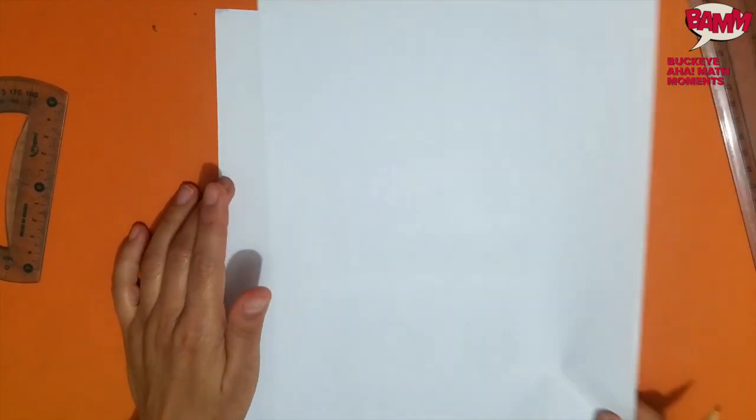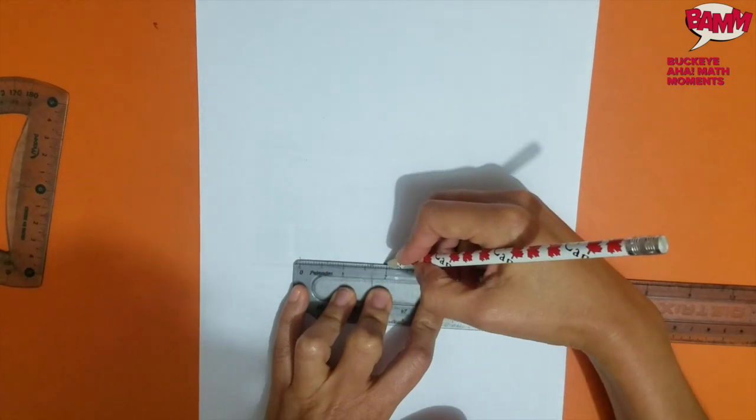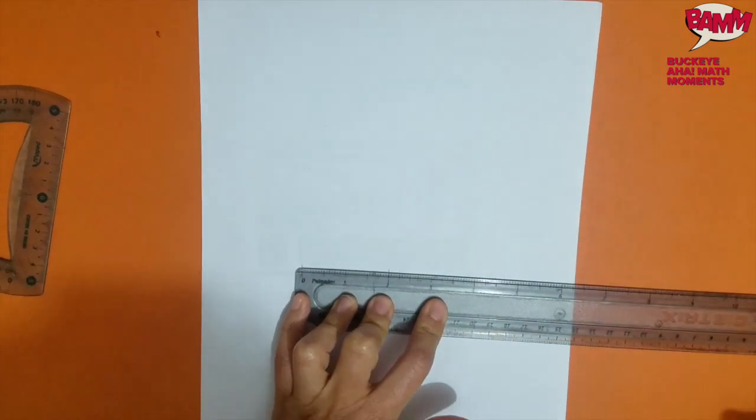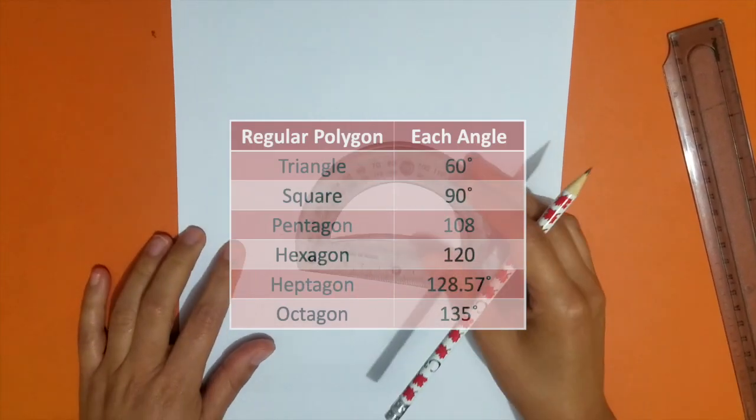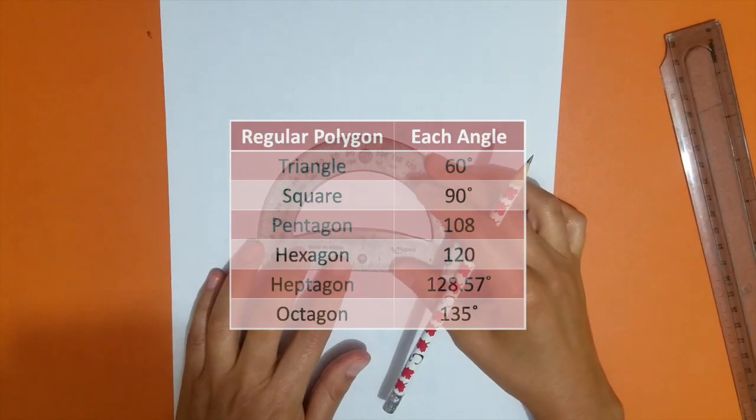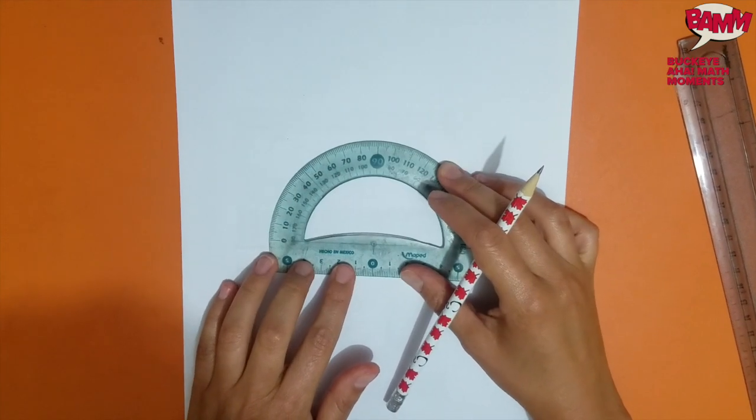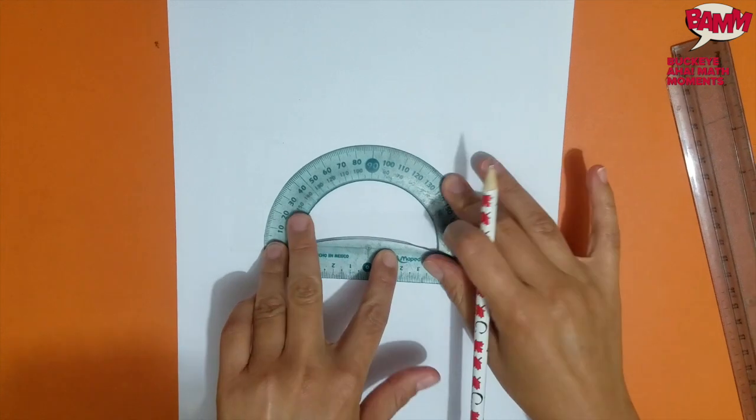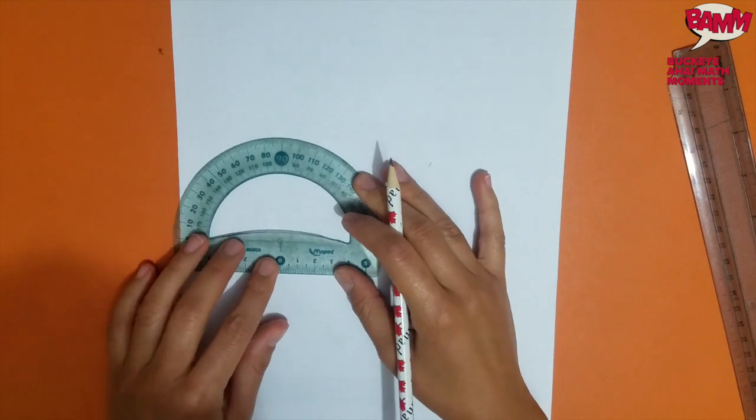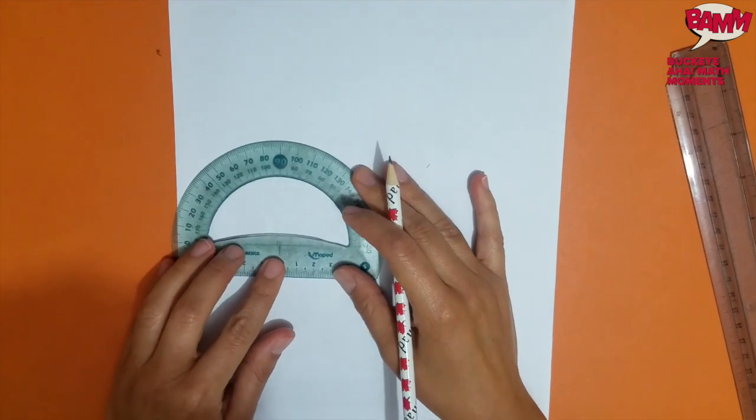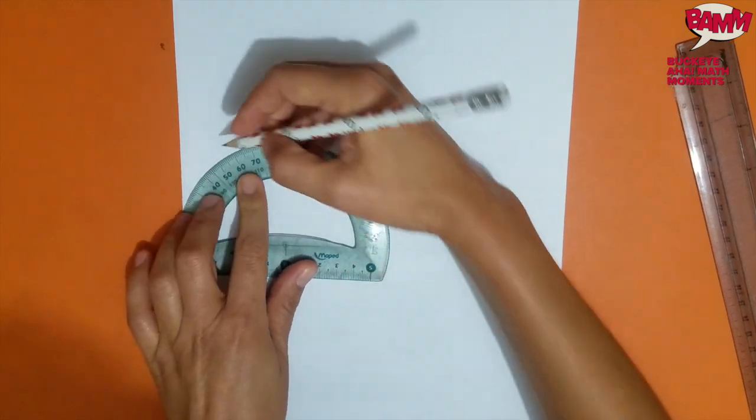But we can also do that for all the other polygons. Let's try a hexagon first. Again, 2 inches. And hexagons have angles of 120 degrees. So that's what I'm going to measure in here. Again, I set up my protractor on one end of the line that I drew and mark 120 on each side.